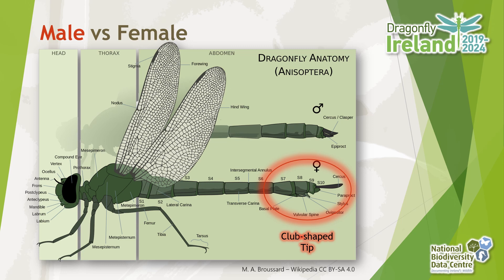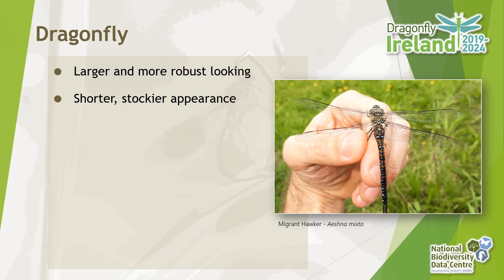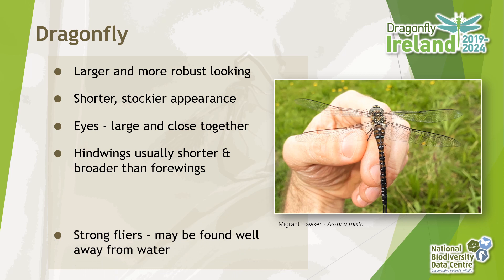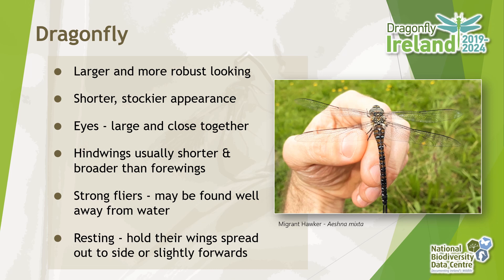The features that indicate we've found a dragonfly include the fact that they're larger and more robust-looking than damselflies, with a generally shorter and stockier appearance. Their eyes are larger and close together — indeed, almost touching in most cases. The hind wings are usually shorter and broader than the forewings. They're strong flyers and can often be found well away from any known source of water. When resting, they hold their wings out to the sides or slightly forward.